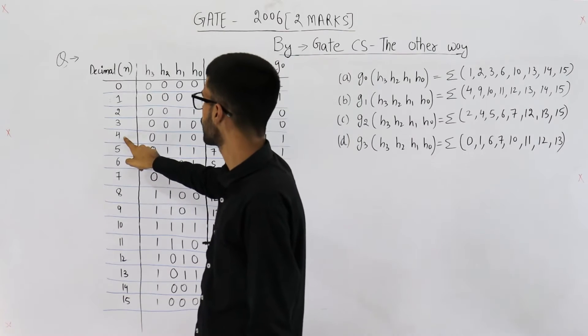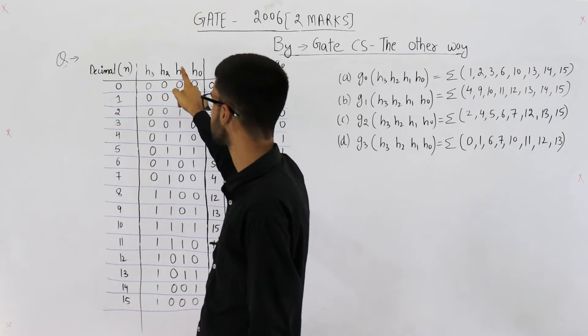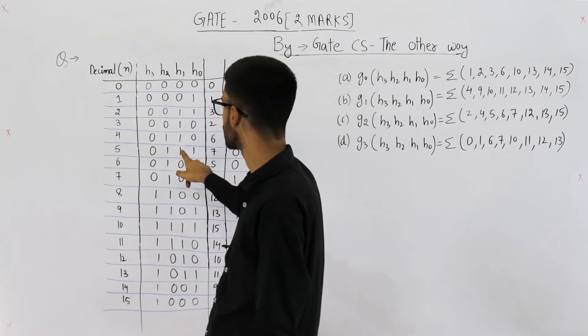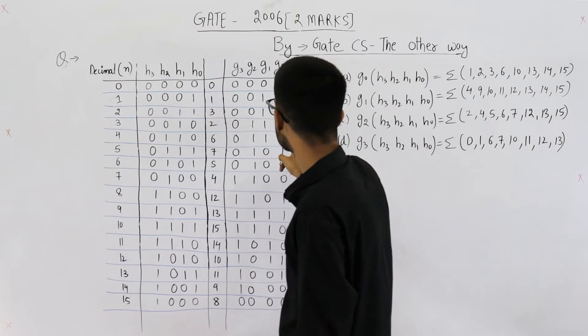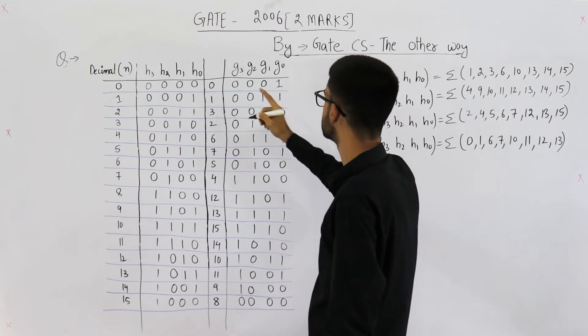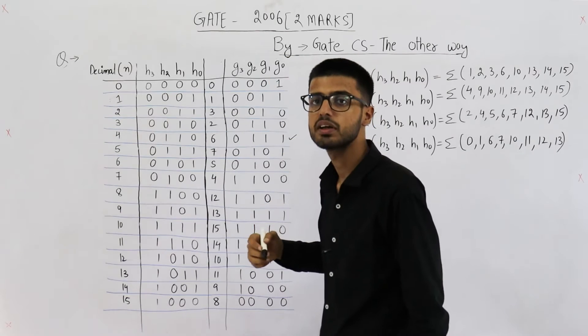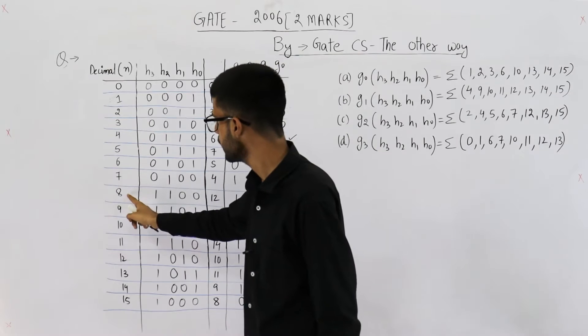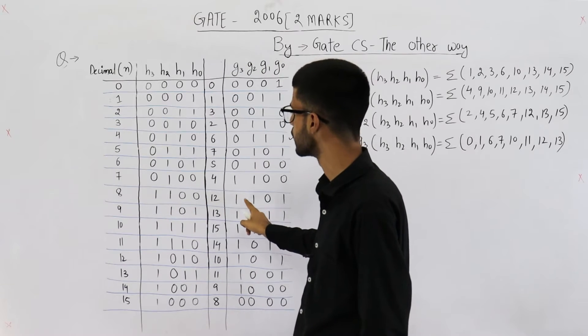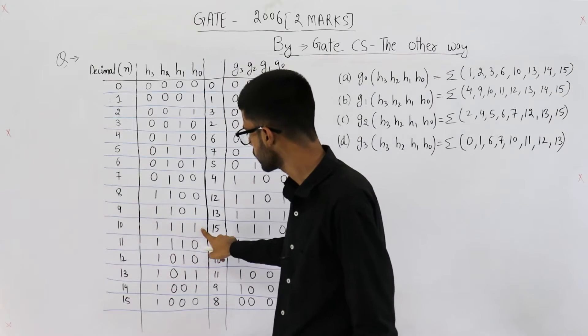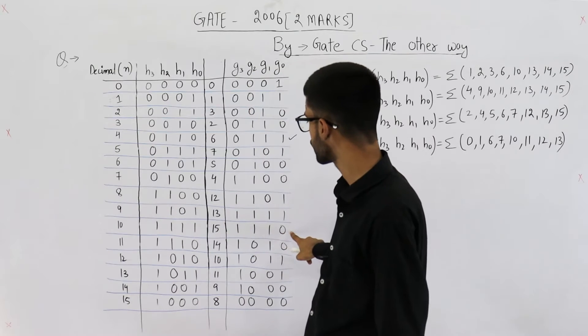And also they are specifying g is n plus 1 modulo 16. That means for 4, see, this is the gray code of 4. h3, h2, h1, h0 represents the gray code of 4. And what is this? What is g3, g2, g1, g0? This will be gray code of 5. For 8, this is gray code of 8. This is gray code of 9. For this column, this one is gray code of 10. This is gray code of 11.